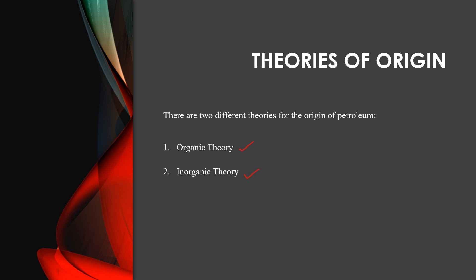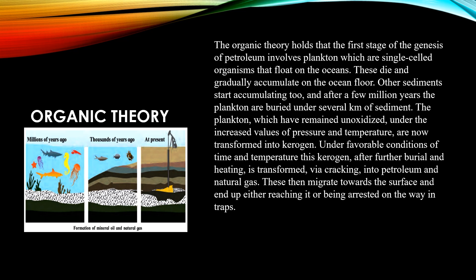The organic theory holds that the first stage of genesis of petroleum involves plankton, which are single-celled organisms that float on the ocean surface. These die and gradually accumulate on the ocean floor. Other sediments start accumulating too, and after a few million years the plankton are buried under several kilometers of sediments. The plankton, remaining unoxidized under increased pressure and temperature, are transformed into kerogen. Under favorable conditions of time and temperature, this kerogen is transformed via cracking into petroleum and natural gas.